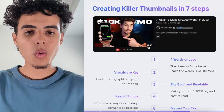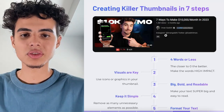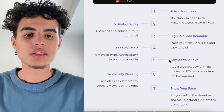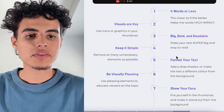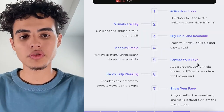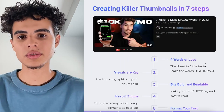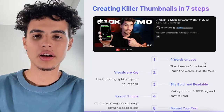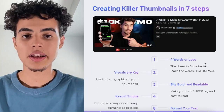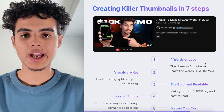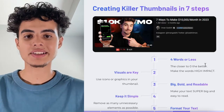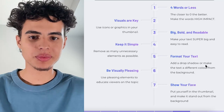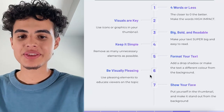This ties into being big, bold, and readable, but you also want to format your text so it's readable. Add a drop shadow, you can even add an outline, a gradient, and an inner glow. Overall, just do whatever you can to make sure the text is super easy to read.